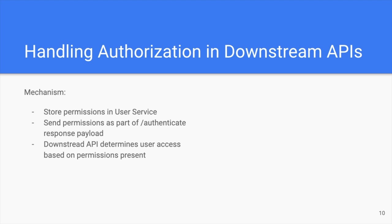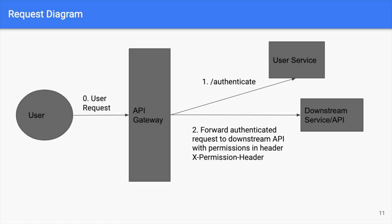Now let's talk about a solution where we delegate authorization business logic down to each of our individual microservices. We could use a mechanism as follows: we store permissions in the user service, send permissions as part of the authenticate response payload, and then construct some code in downstream APIs that consumes that permission blob and determines user access accordingly. An example request might look as follows: a user makes a request against the gateway, the gateway queries the authenticate endpoint and receives a response payload including the user's permissions, the gateway then forwards the authenticated request along with the permission blob in, say, an x-permission header to the downstream APIs, which can then make a decision whether or not to allow or deny the request.